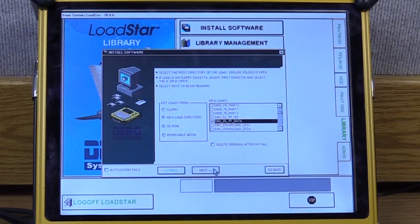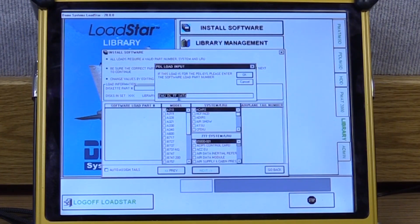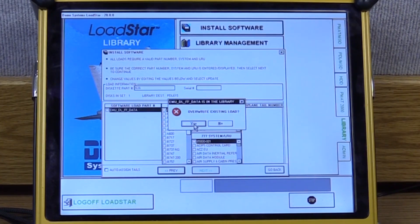Check that box and click next. Here you need to confirm EMU DLFF data shows up in the pop-up, select ok and if you receive this message go ahead and overwrite the existing load.